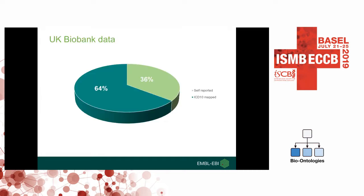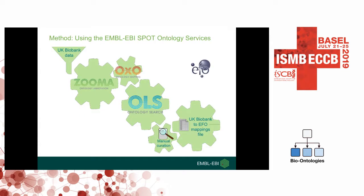The UK Biobank data consisted of 1,552 traits split into two groups. The first group was the ICD-10 mapped traits — trait descriptions previously mapped to ICD-10 codes. The second group was the self-reported traits — trait descriptions with no prior mappings, which came from the Neal lab. We aimed to map both groups to EFO using a variety of tools from the SPOT Ontology Tooling Suite, alongside manual curation of the results.